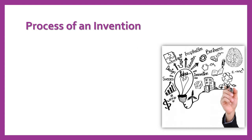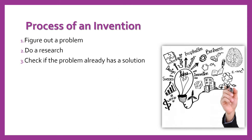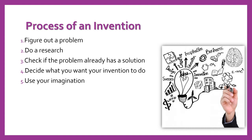Now we're going to see the process of an invention. First of all, you have to figure out a problem. Next, you have to do research. Next, you have to check if the problem already has a solution. Next, you have to decide what you want your invention to do.